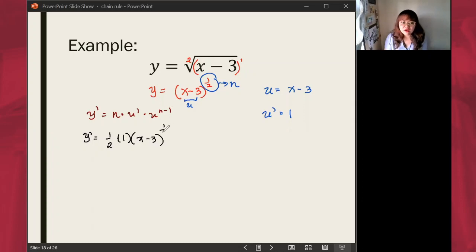Raised to one-half minus 1. We simplify what we could simplify, and we'll get one-half times x minus 3 raised to negative one-half. One-half minus 1 is negative one-half.